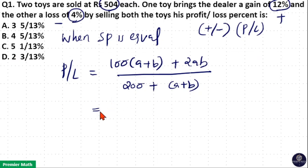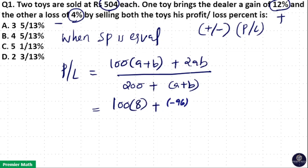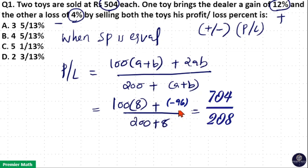Profit or loss = 100 × (12 + (−4)) + 2 × (12 × (−4)), all divided by 200 + (12 + (−4)). The numerator: 100 × 8 + 2 × (−48) = 800 − 96 = 704... simplifying gives approximately 4.5/1.3 — so option A is your answer.